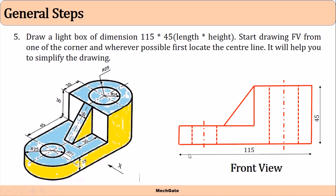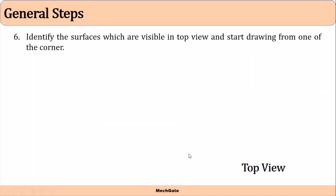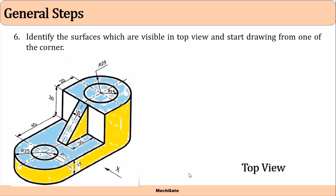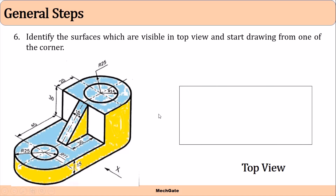Now let's draw the top view. In the top view, the two visible dimensions are length and breadth. Our object has a length of 115 and a breadth of 50, so if I make a rectangle of 115 by 50, I can fit the top view inside it. In the top view the semicircular edges are visible, so let's first draw a rectangle box of 115 by 50.